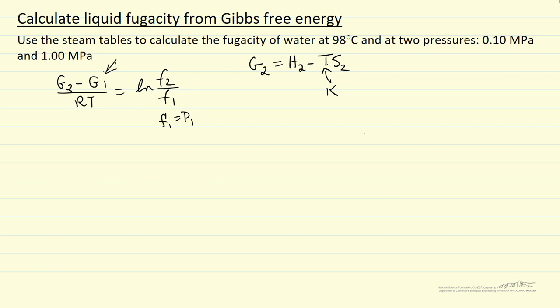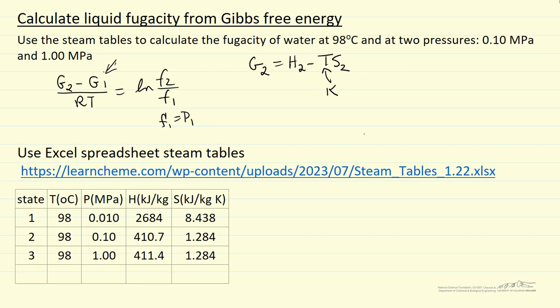So we're going to use the steam tables that are available online. There's a spreadsheet on the LearnChemE site. The link's given here where we can look up the steam tables. So I picked condition one at the lowest pressure that's available in the steam tables where it's likely to be an ideal gas. And then here are the other two conditions that we want to do the calculation at. So I've looked up the H values and S values in the steam tables.